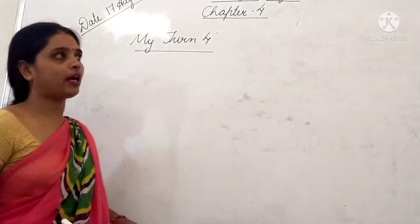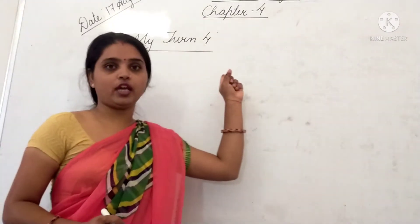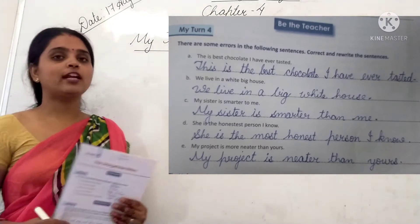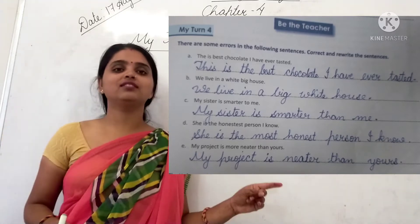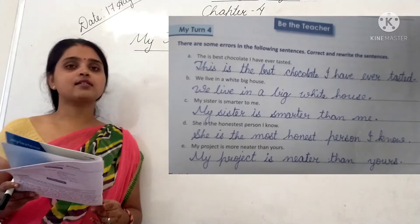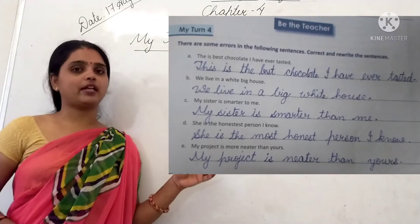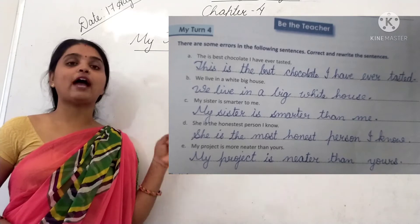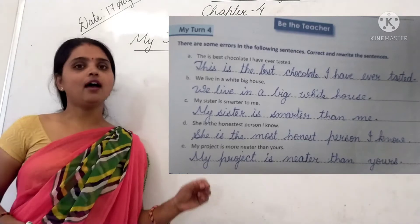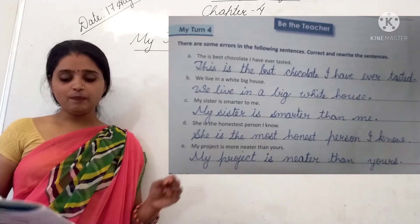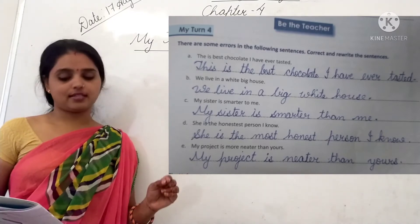In the previous class I explained My Turn 1 and My Turn 2. Today we are going to solve My Turn 4. Let's see the questions on the board. There are some sentences with errors — some mistakes — and what you have to do is correct them and rewrite them. The first question is: 'The is best chocolate I have ever tasted.'